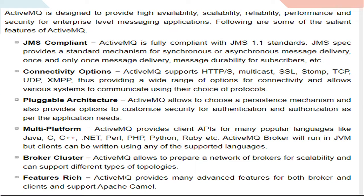So what are the benefits that it provides? The benefits include high availability, scalability, reliability, performance, and security for enterprise-level messaging applications. It is JMS compliant — ActiveMQ is fully compliant with the JMS 1.1 standard. The JMS specification provides a standard mechanism for synchronous or asynchronous message delivery, once-and-only-once message delivery, and message durability for subscribers.